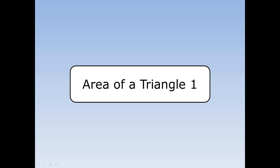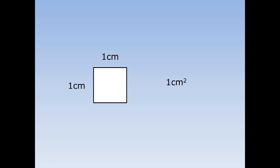Area of a triangle. Area is the space inside a shape. We measure it using centimetres squared. One centimetre squared is a square that's one centimetre by one centimetre. Remember, we write centimetre squared as cm with a little 2 above it.